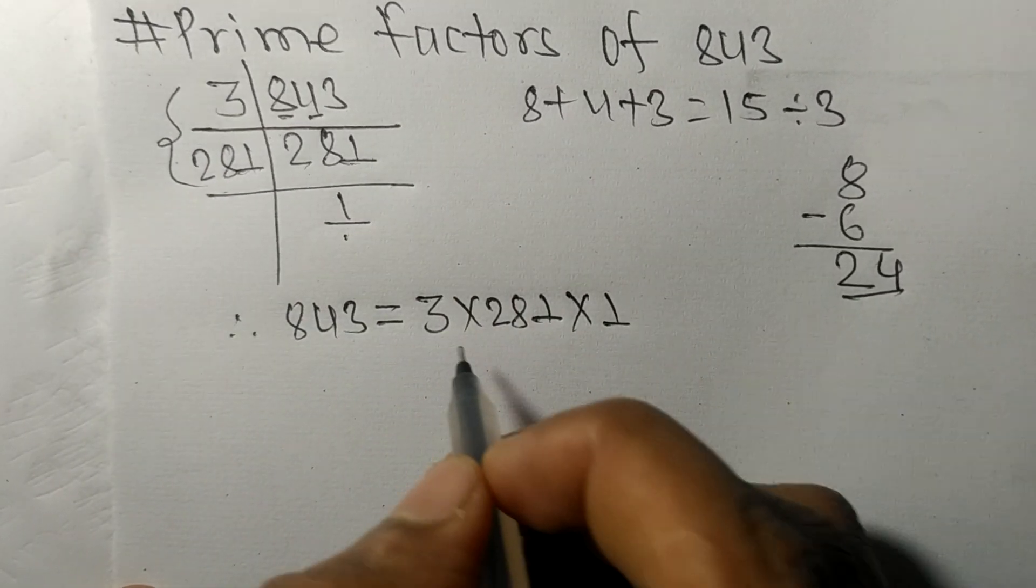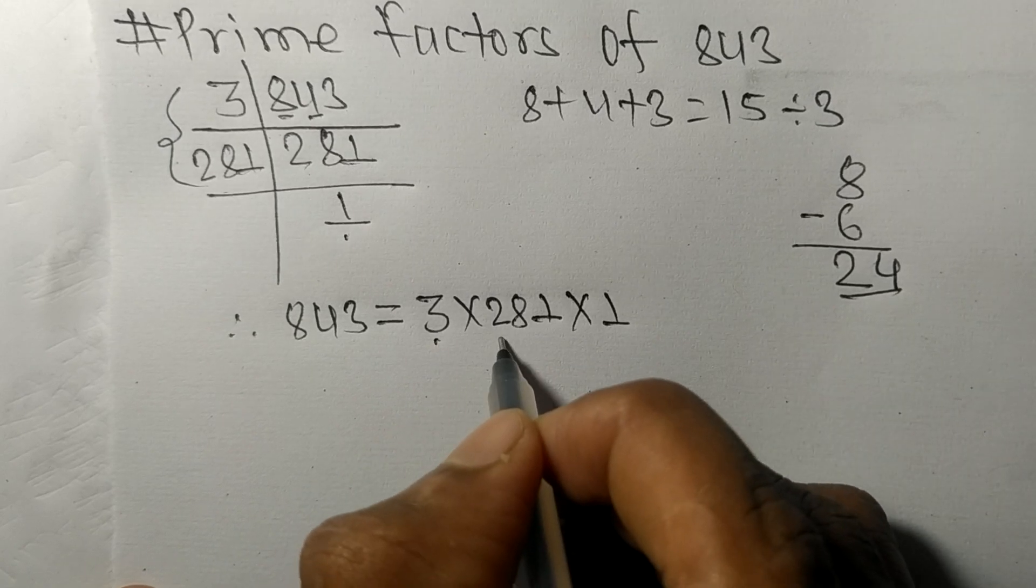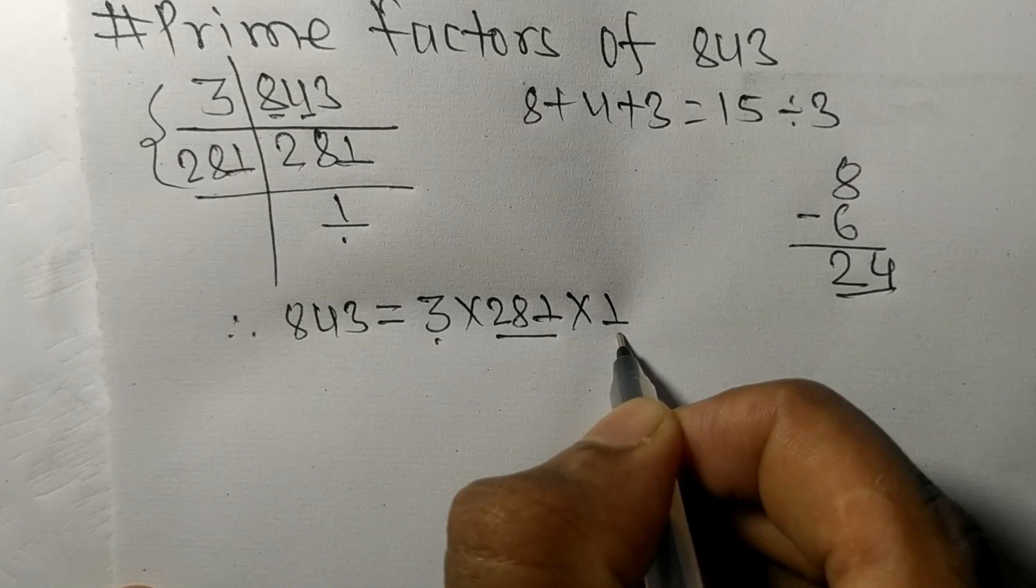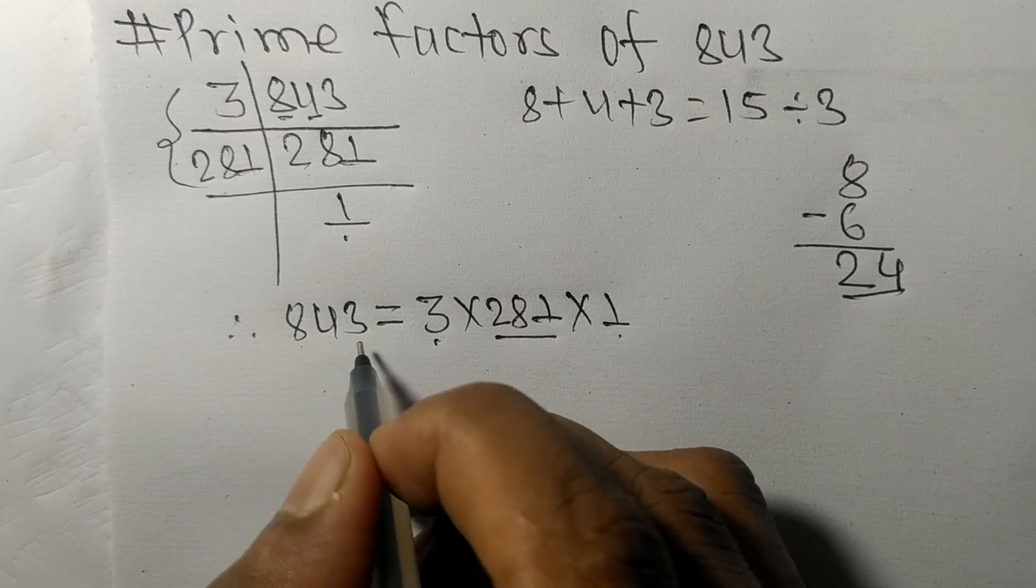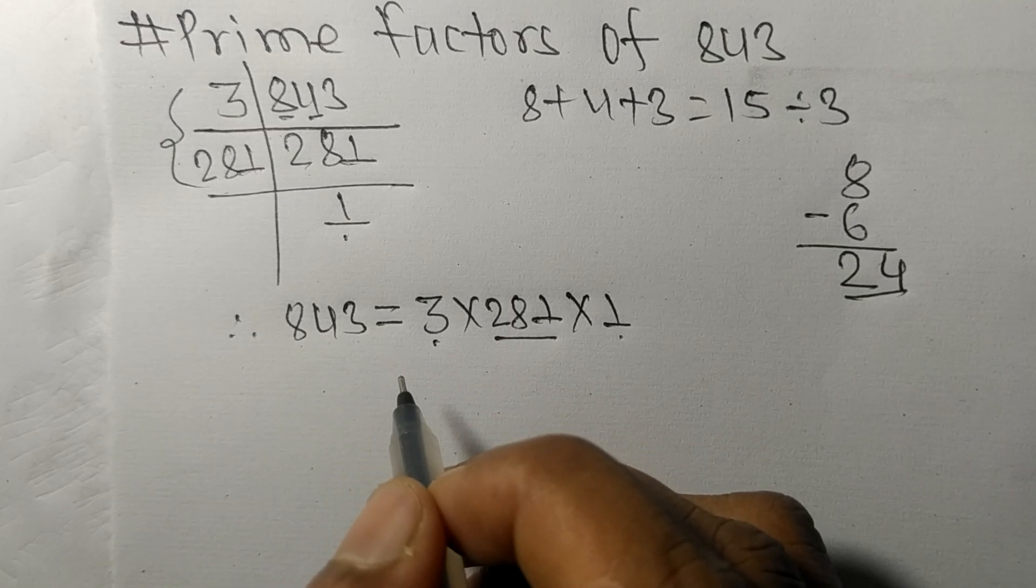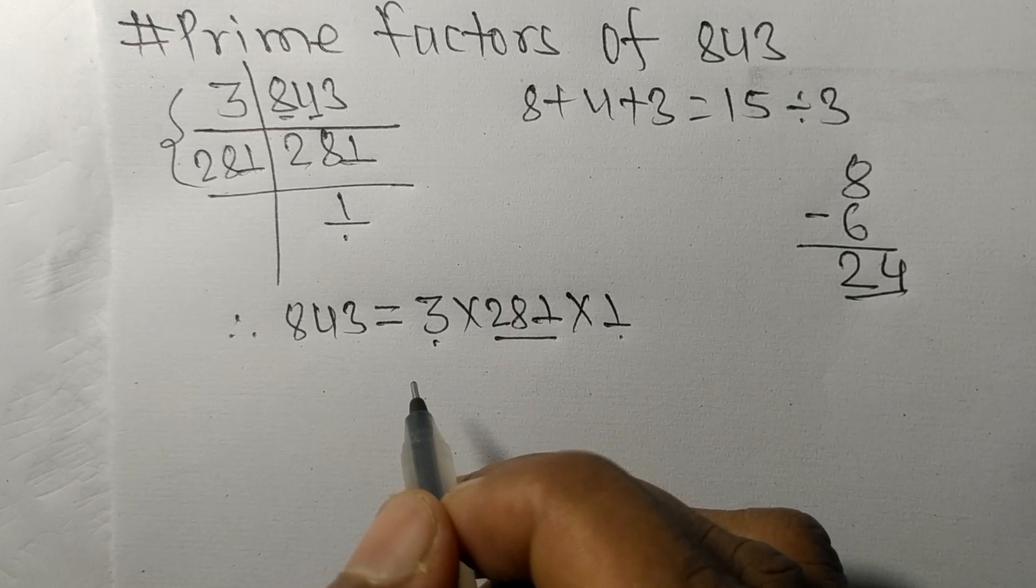So 3, 281, and 1 are the prime factors of 843. This is all for today. Thanks for watching!